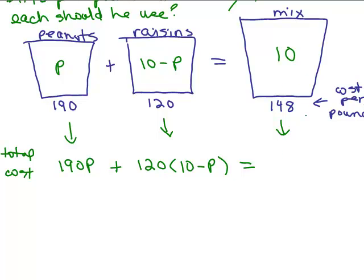Now, we want that to be the same as the cost of the total mixture that he wants to pay. And what he really wants to pay is what? He only wants to pay 148 cents per pound for all 10 pounds. So, there's going to be a total of 10 pounds. So, we have 148 times 10. In each case, it's always the price or cost per pound times how many pounds we have. So, here's the equation.